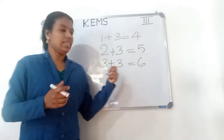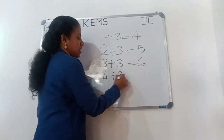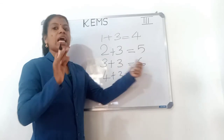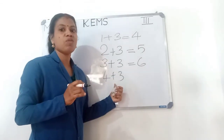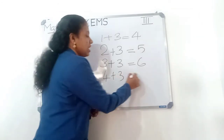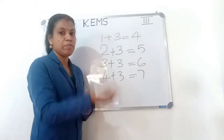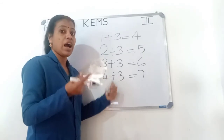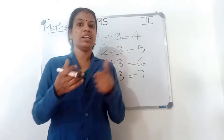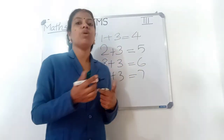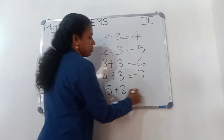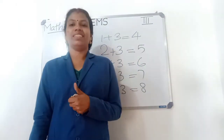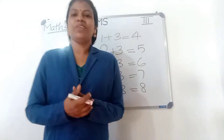Then 4 plus 3: we know 3 plus 3 is 6, and one more number here, so 4 plus 3 is 7. Then 5 plus 3: two numbers more than 3 plus 3 which is 6, so 5 plus 3 is 8. Study the tables so that you can add easily.